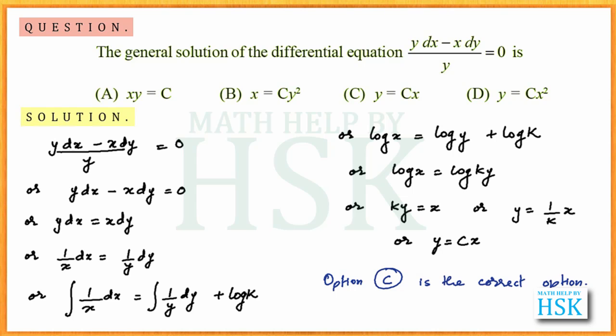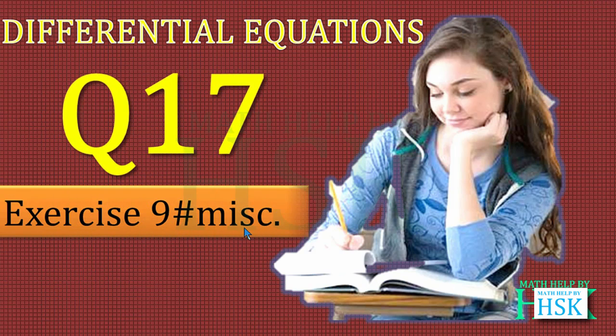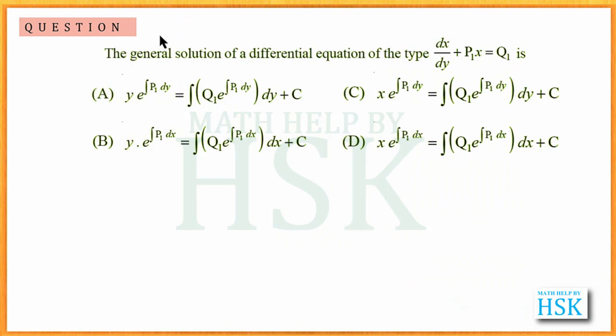This is how I am going to solve this question. Taking question number 17 of miscellaneous exercise of chapter 9, we have been asked: the general solution of the differential equation of type dx upon dy plus P₁x equals Q₁ is which of the following option.